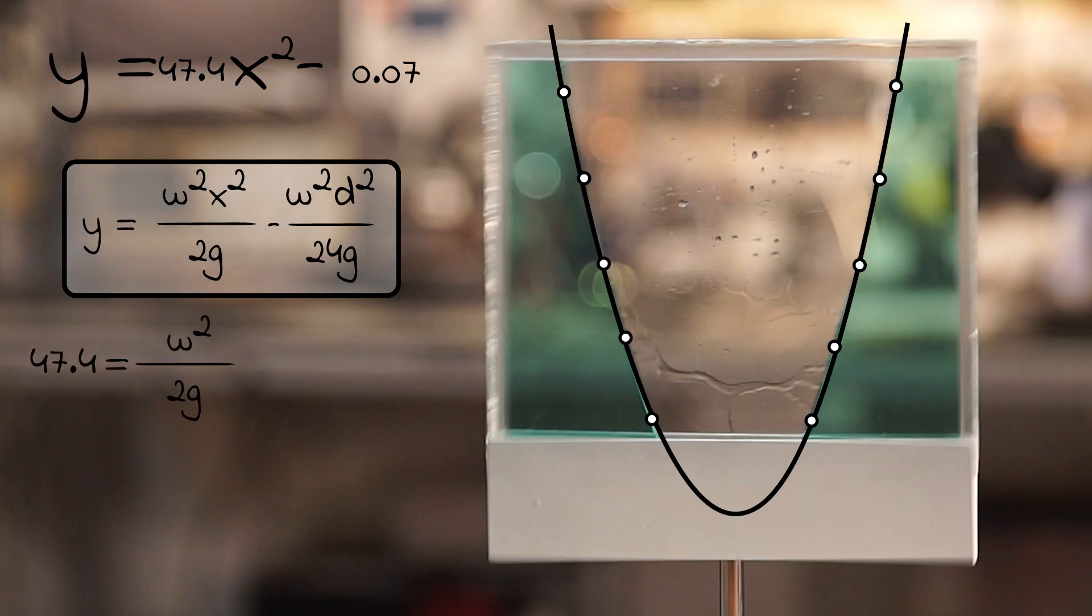In this case, I'm using the quadratic part. I can then extract omega from the equation, which is measured in radians per second. Converting units to RPM, we get 291 revolutions per minute. Pretty fast I'd say.